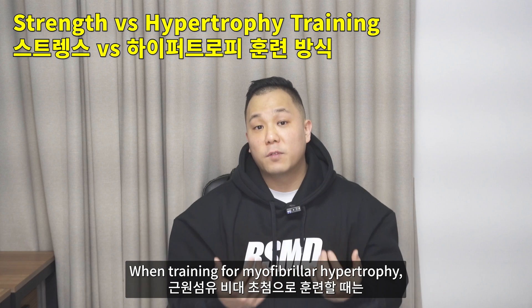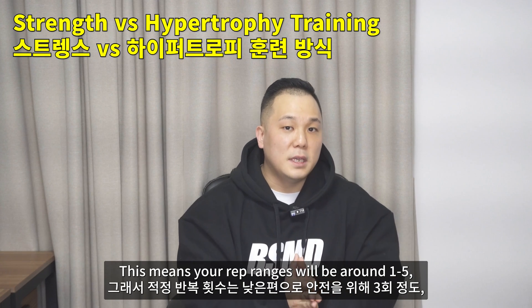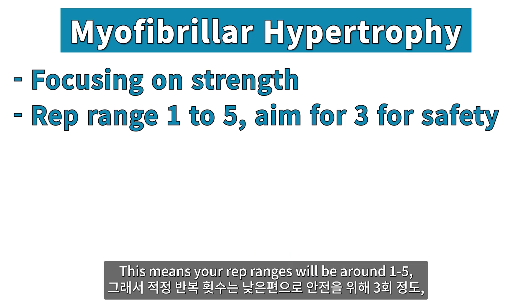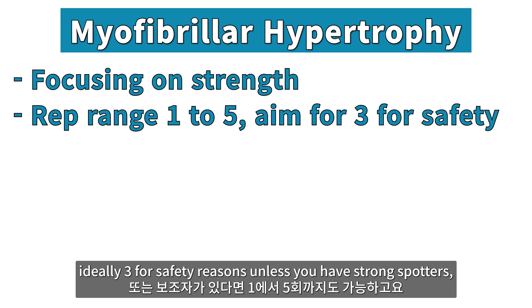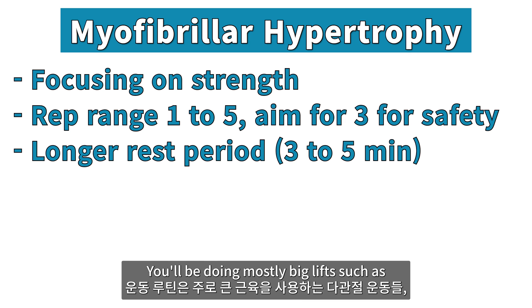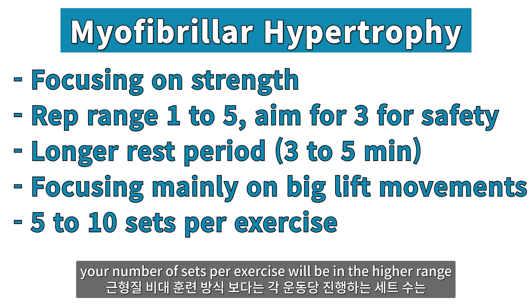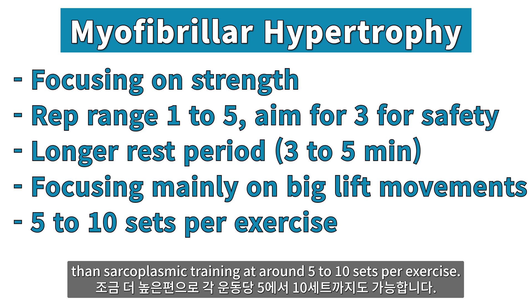When training for myofibrillar hypertrophy, you'll be focusing mainly on strength. This means your rep ranges will be around 1 to 5 — ideally 3 for safety reasons unless you have strong spotters — and rest time from 3 minutes up to even 5 minutes. You'll be doing mostly big lifts such as deadlifts, squats, overhead press, bench press, and rows, and your number of sets per exercise will be in a higher range than sarcoplasmic training, at around 5 to 10 sets per exercise.